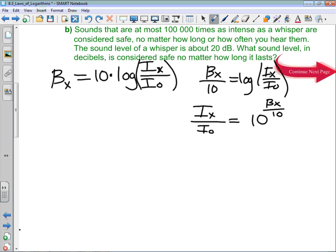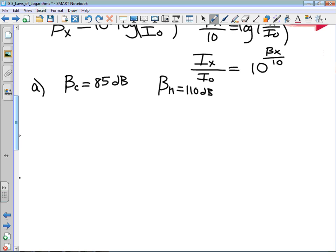Part A tells us that the decibel reading of a chainsaw is equal to 85 dB and the decibel reading of headphones is equal to 110 dB. The question asks us how many times as intense as the sound of a chainsaw is the maximum volume, sending that 110.